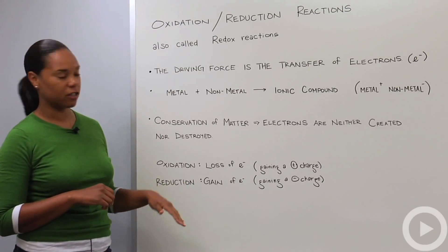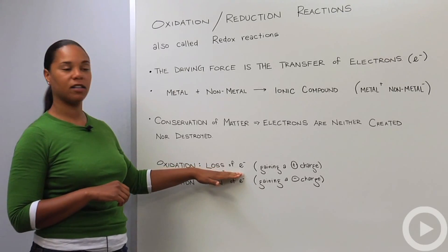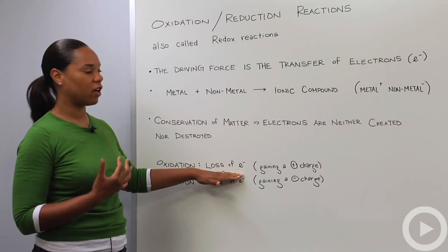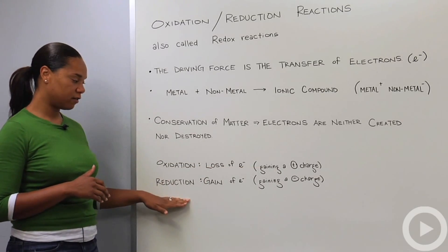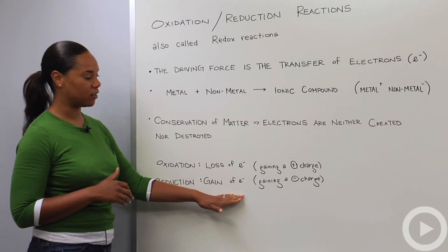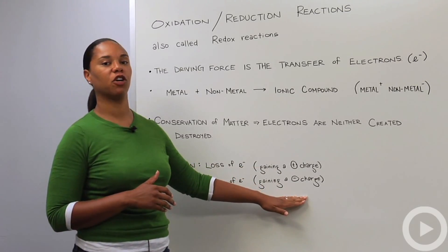So what is oxidation? Oxidation is the loss of electrons, or you can also think of it as the gaining of a positive charge. Reduction is the gain of electrons, or the gaining of a negative charge.